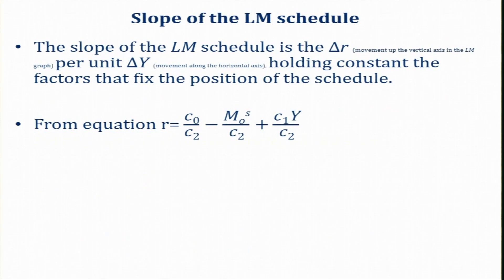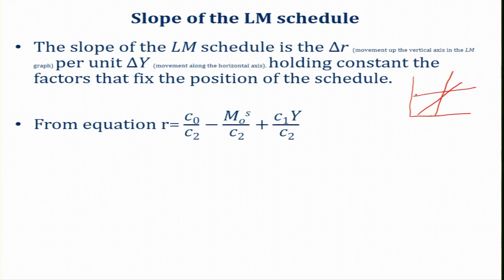Let us now see what factors determine the slope of the LM schedule. The slope is ∂r/∂y — the movement along the vertical axis per unit movement along the horizontal axis, holding constant the factors that fix the position of the schedule. The slope can be more flat, more steep, or unitary elastic. What determines the slope of this LM schedule?